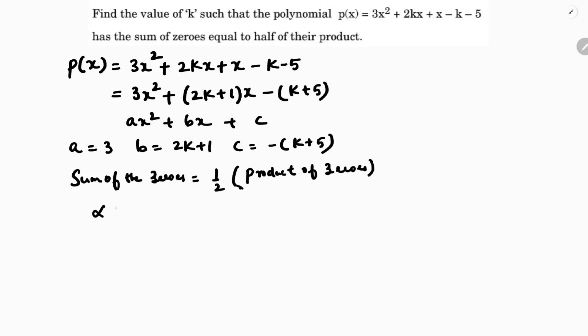The sum of zeros is α + β, which equals half of α·β. So α + β = -b/a, and half of the product is (1/2)·(c/a). The a's cancel, leaving -b = (1/2)c.